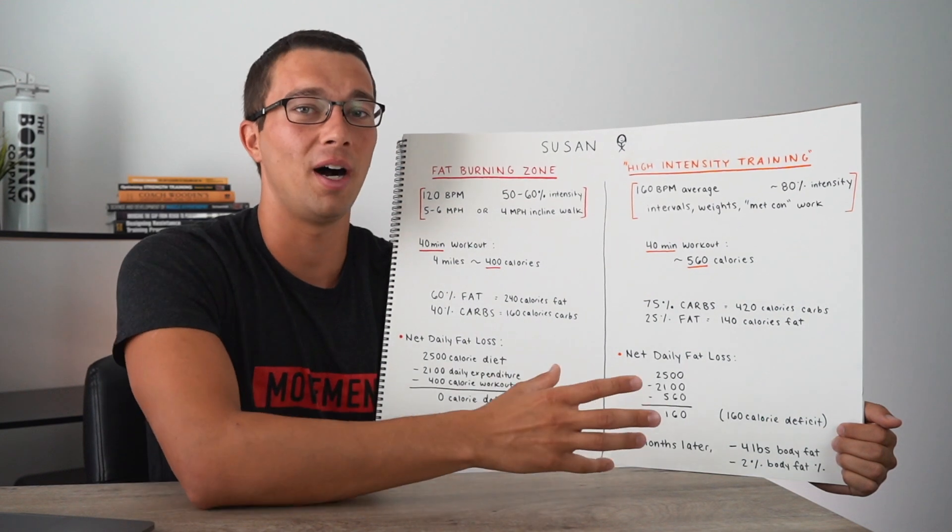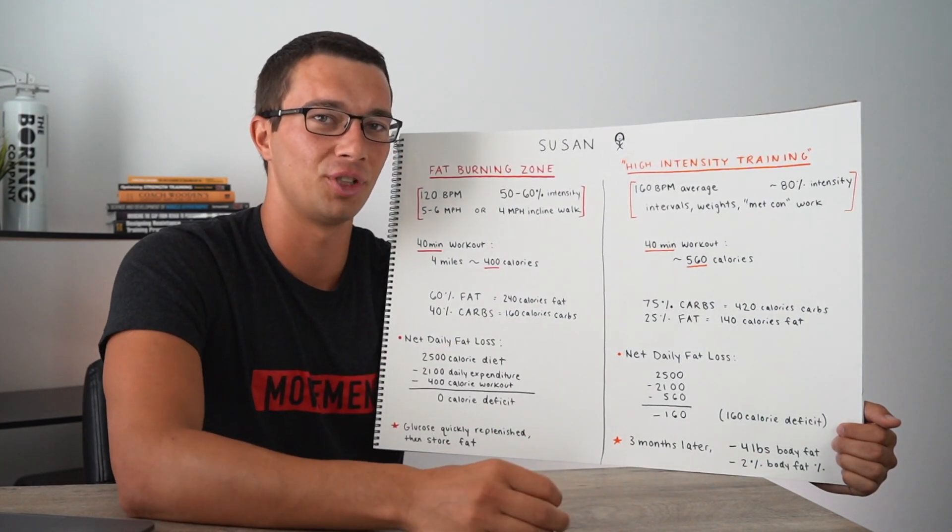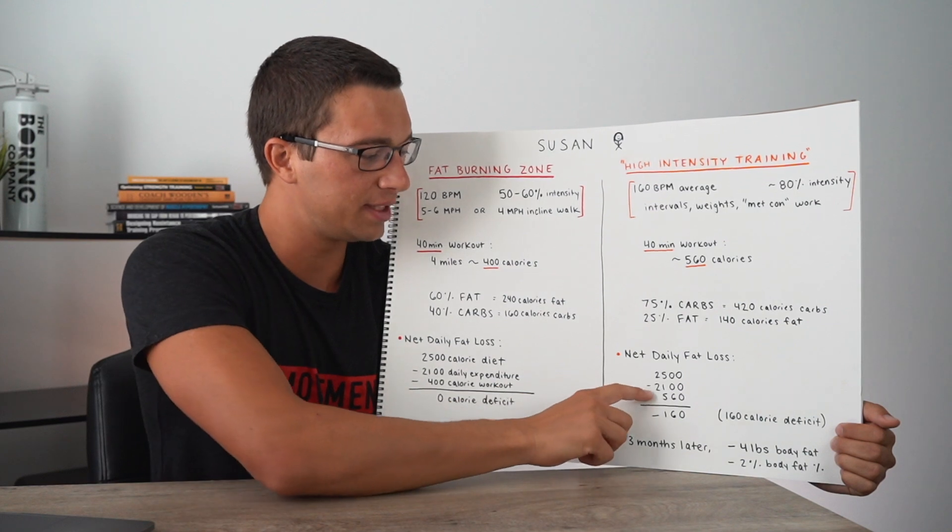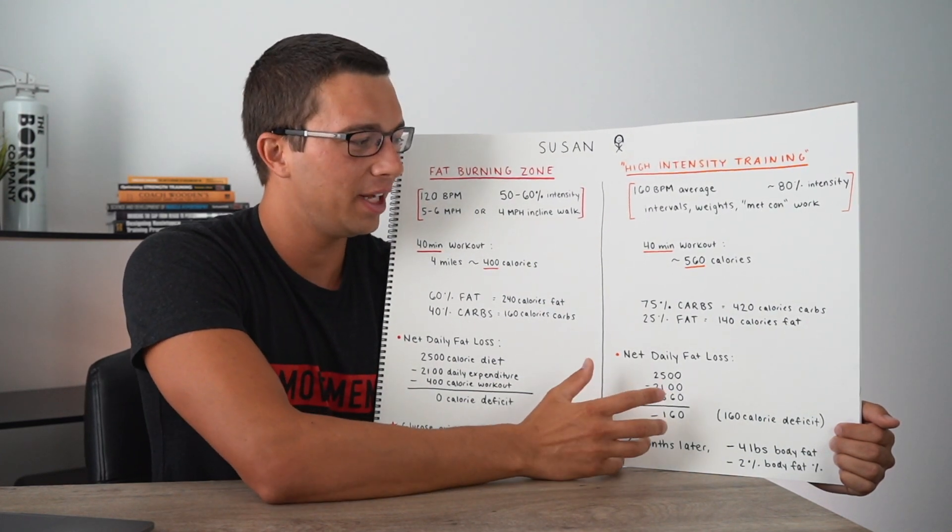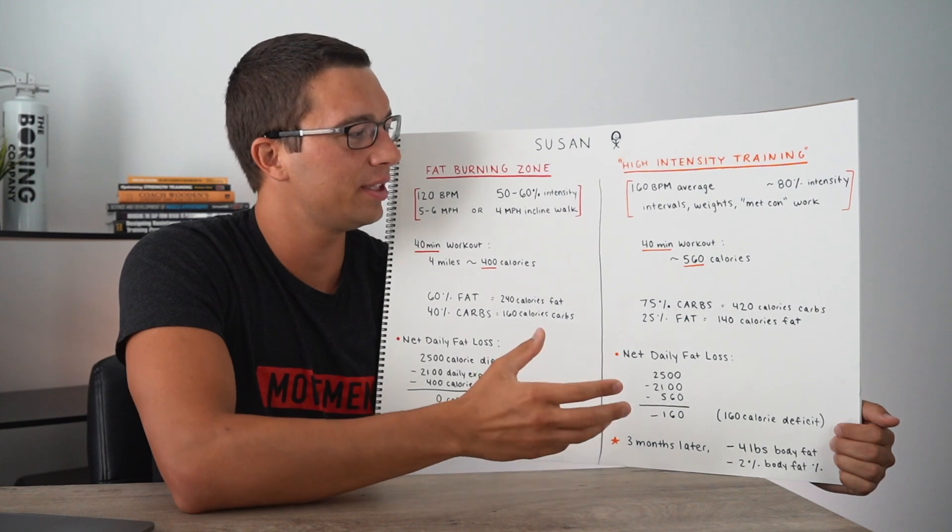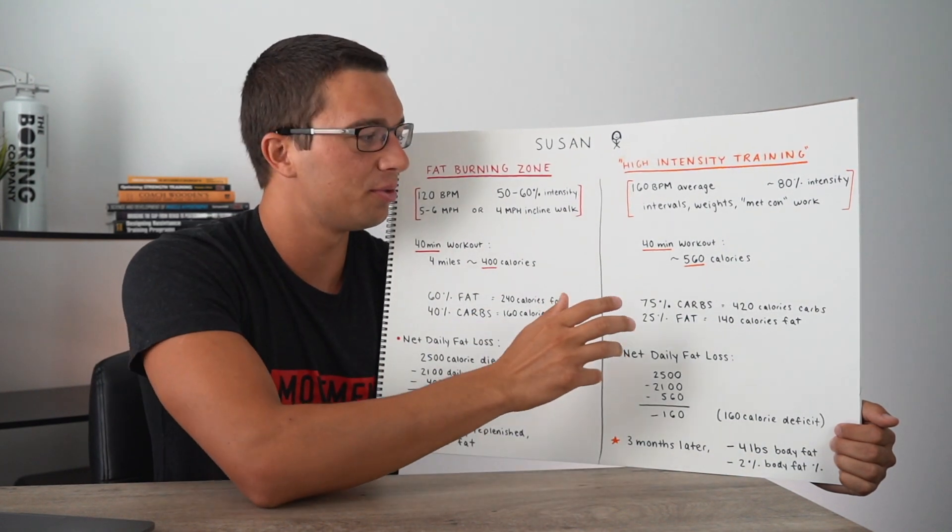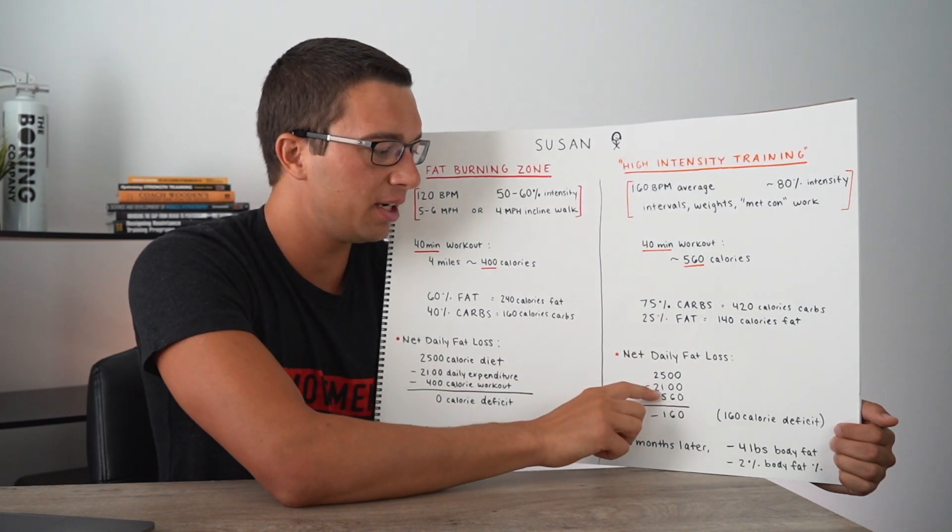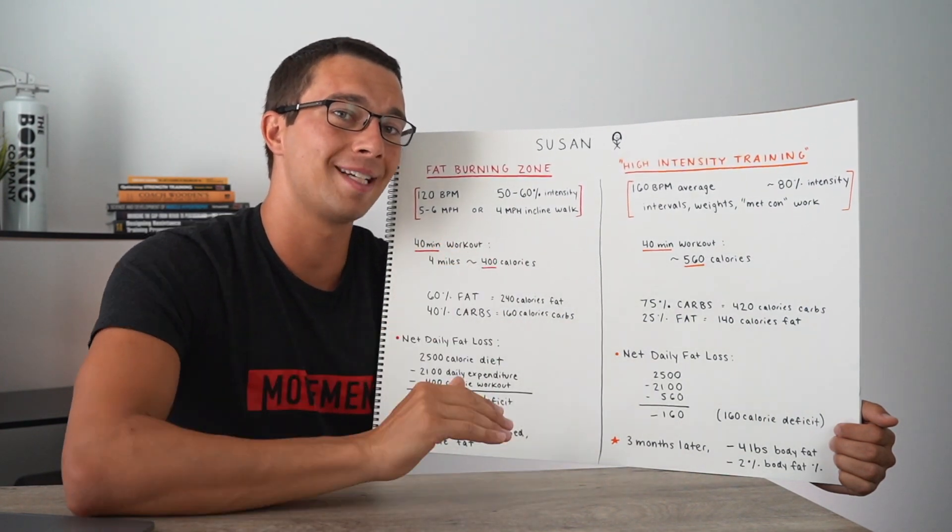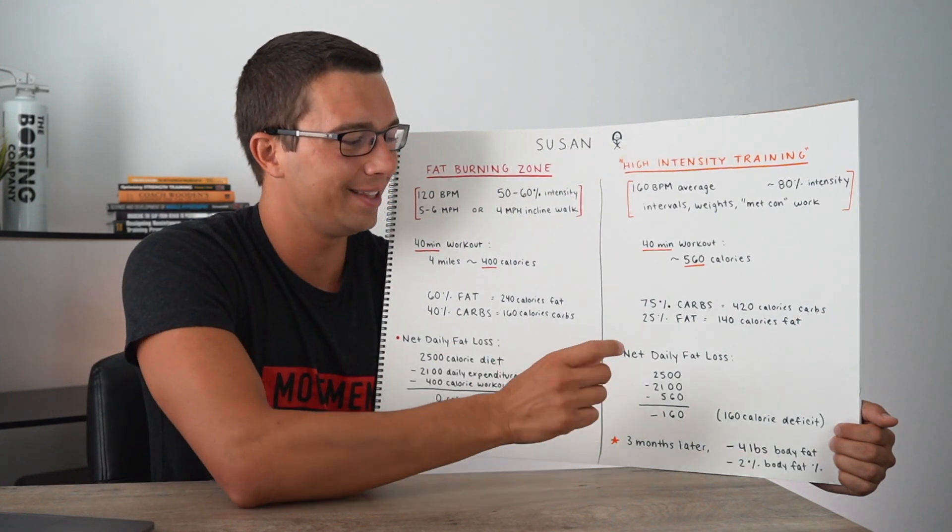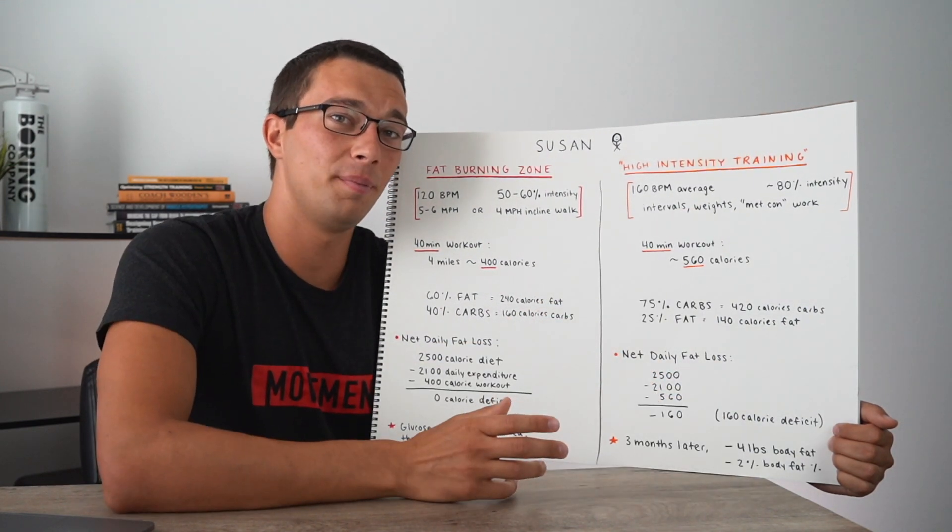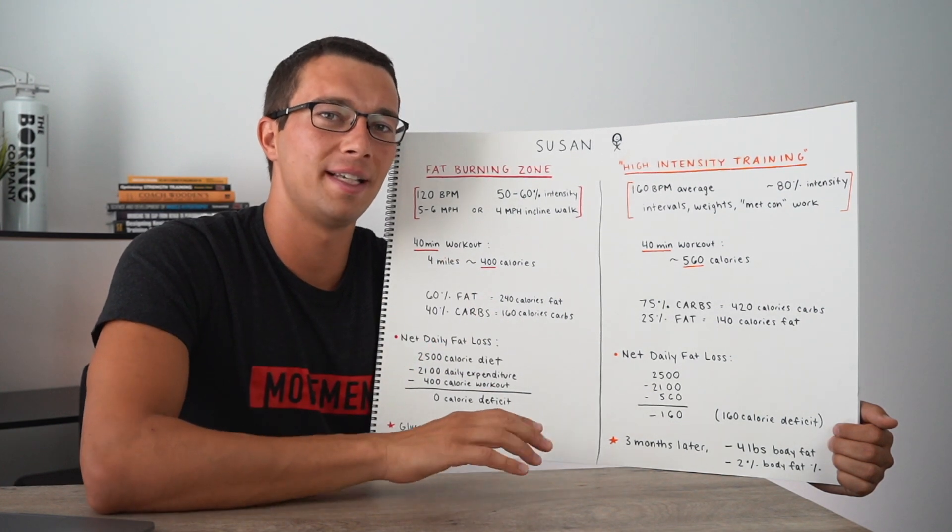Another question you might have is what about EPOC, which is excess post-exercise oxygen consumption. So after high intensity training, don't we rev up our metabolism and burn more calories for the next 24 hours? So shouldn't this daily energy expenditure be higher? And the answer for that is kind of. With a high intensity interval training session, you may burn an extra 10% or so of calories over the next 24 hours. So it may actually be reasonable to add about 50 calories here to our daily energy expenditure because over the next 24 hours, it might take a longer time period for oxygen consumption to go back to baseline and therefore we would actually expect a little bit more energy expenditure throughout the day. And that could actually contribute to even better results with this high intensity training method. And if you're not familiar with what EPOC is, I actually do have a full video that breaks that down and explains it that I'll link below.